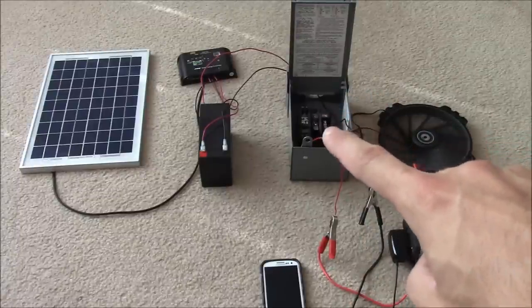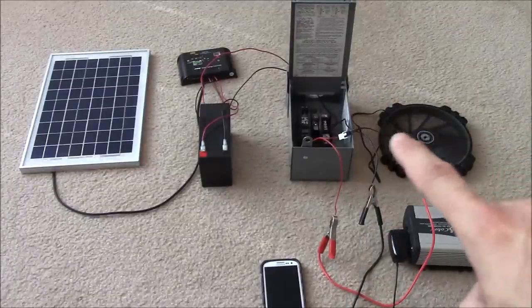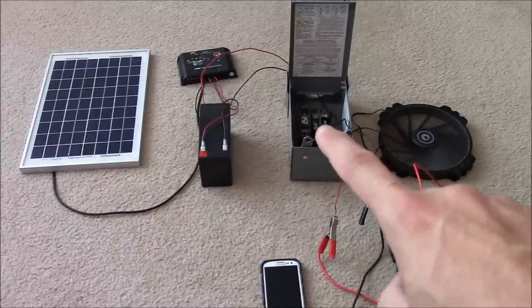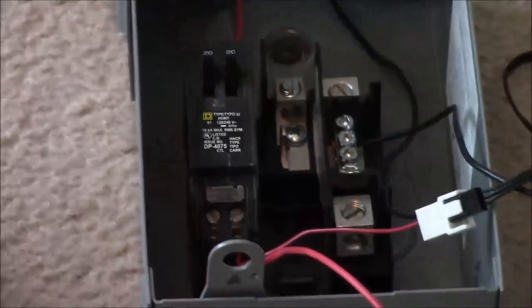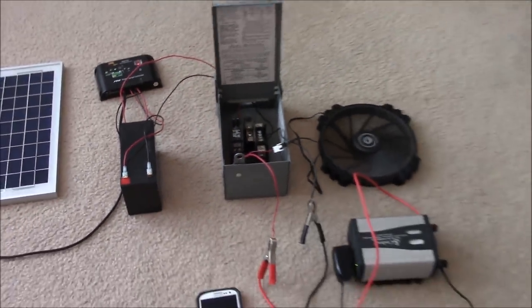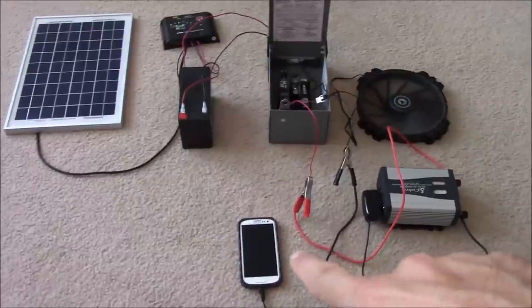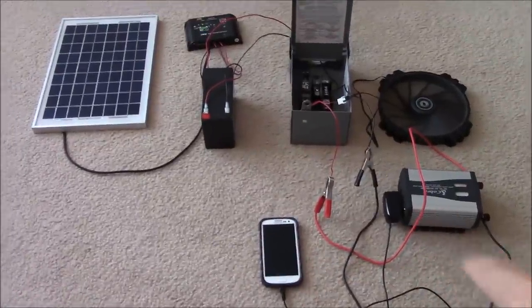This is a load center, which basically means it's distributing the load to multiple loads. So we have a double-pole breaker so that we have two different loads on the same breaker. One going to the fan, one going to charging the cell phone through this inverter.